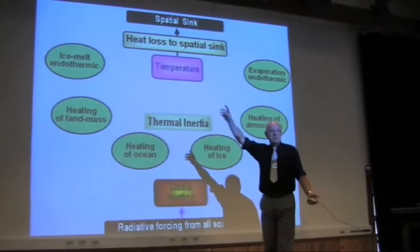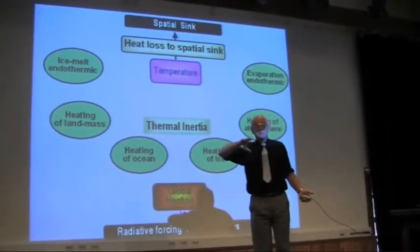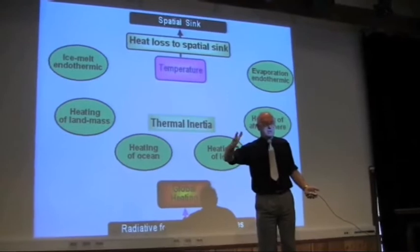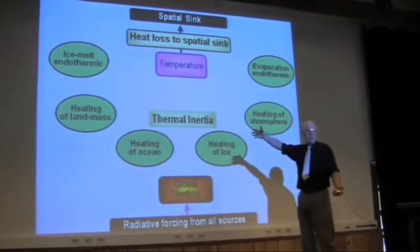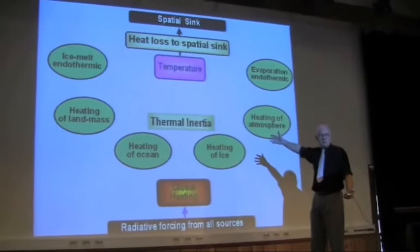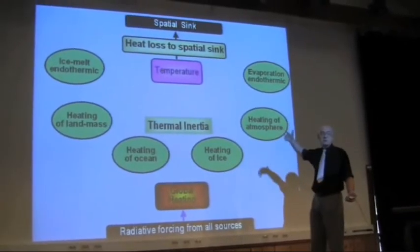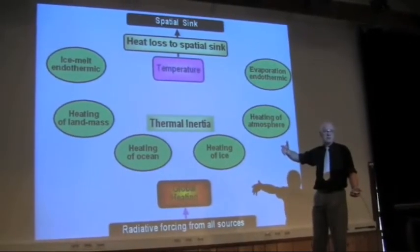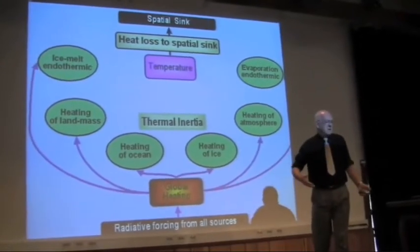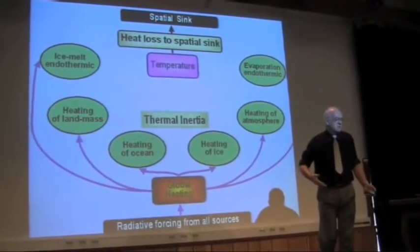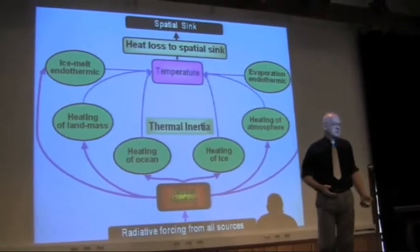Melting of ice takes a lot of energy before the temperature changes at all — it's a phase change from solid to liquid. Evaporation of water and increased water vapour in the atmosphere is also a phase change that takes a lot of energy. So the heat goes through those processes before it starts to make a difference to the temperature.